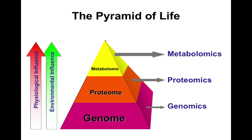One reason I've arranged this as a pyramid is to illustrate a difference in influence. As you go up the pyramid, there is increasing influence of the environment on the different omics. What you're eating or drinking has no influence on your genome — our genome is well protected. It will slightly modify your proteome, changing some levels of insulin or ghrelin. But what you're eating, drinking, and breathing is changing your metabolome every second and quite substantially.